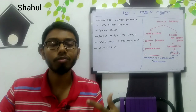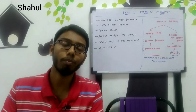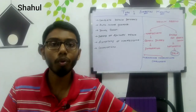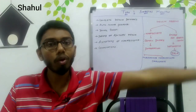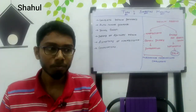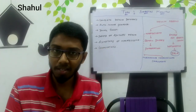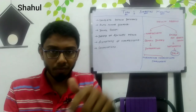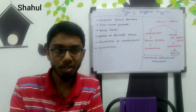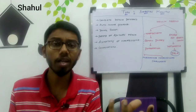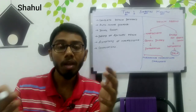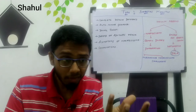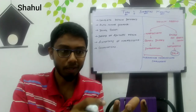Polyuria, polydipsia, and polyphagia are symptoms of diabetes mellitus, but we need to understand the physiology behind them. We have persistent hyperglycemia in the blood, and hyperglycemia increases the osmolarity of blood. Just as a sugar solution is comparatively thicker than plain water, when we have high glucose levels in the blood, the osmolarity of blood is increased.